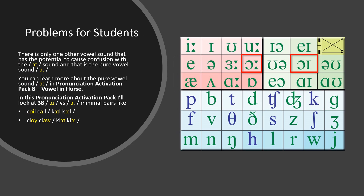Problems for Students. There is only one other vowel sound that has the potential to cause confusion with the OI sound, and that is the pure vowel sound OR. You can learn more about the pure vowel sound OR in Pronunciation Activation Pack 8 – Vowel in Horse. In this pack, I will look at 38 OI vs. OR minimal pairs.